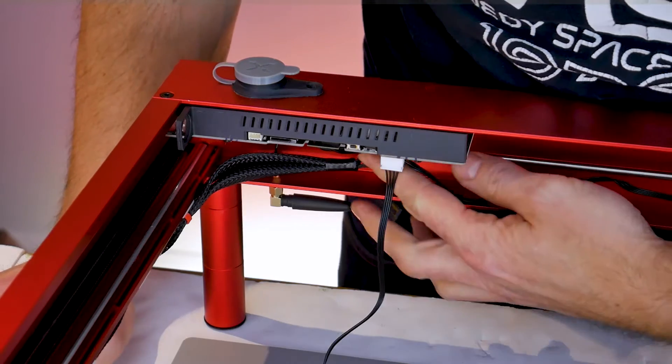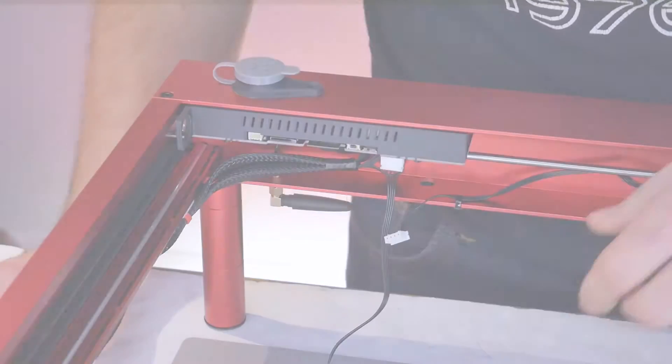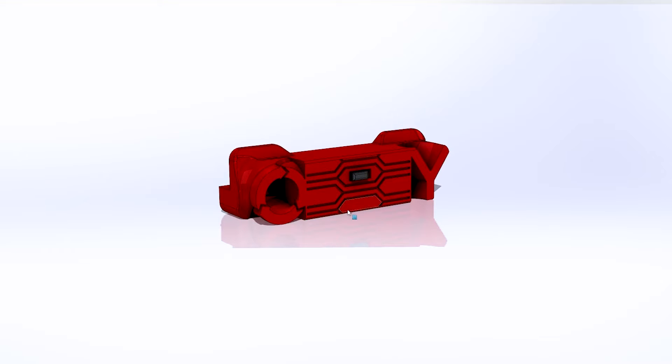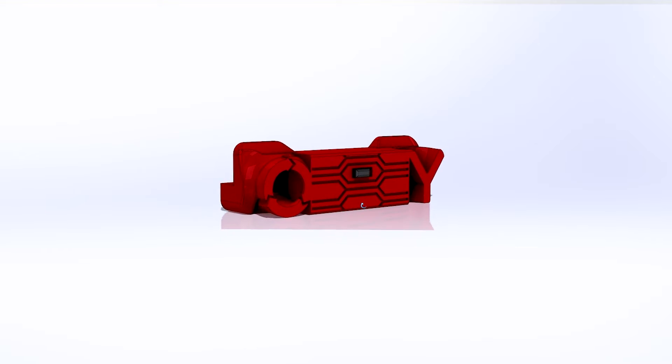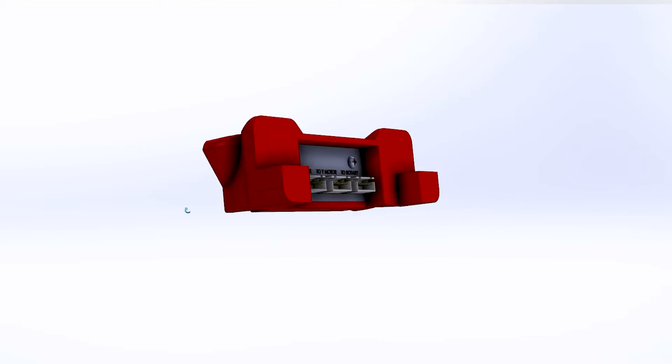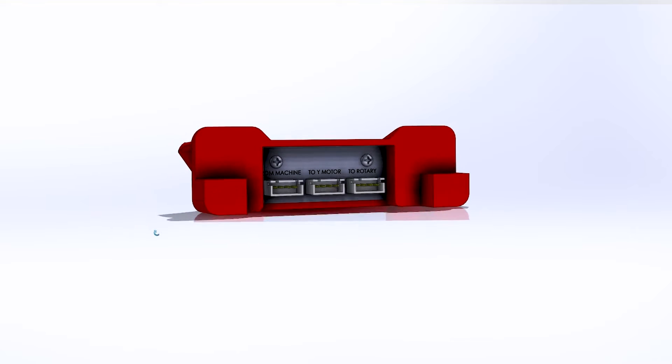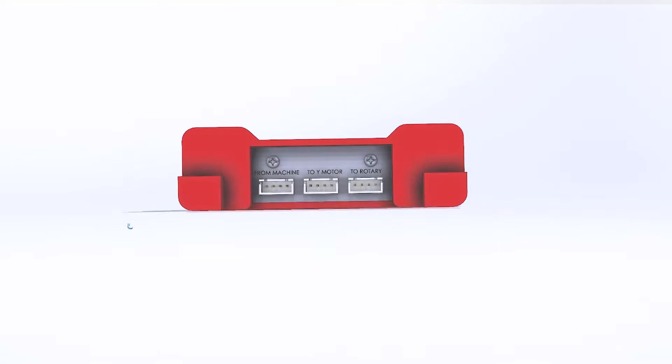This just takes more time, and if you're running a laser cutting and engraving business your time is valuable. In a previous video I introduced this RA2 rotary switch which allows you to keep all of the connectors plugged in simultaneously. Using the switch on the front you can change between the rotary and Y axis functions so you never have to unplug those main board cables again.